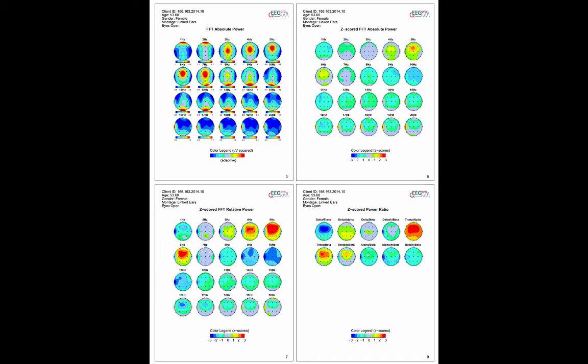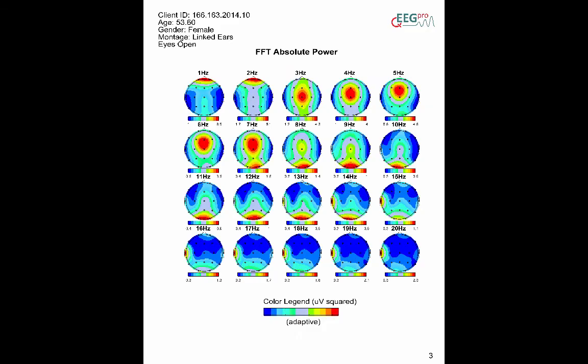For absolute power analysis, both the absolute power in µV² and the z-scored absolute power are available. Be aware that the absolute power analysis has adaptive scaling, meaning that for each discrete frequency bin the plot is scaled between the minimum and maximum voltage within that frequency bin.